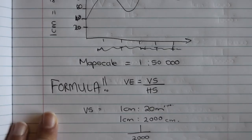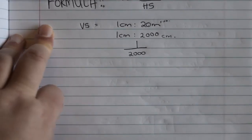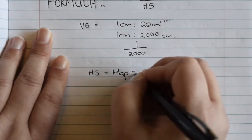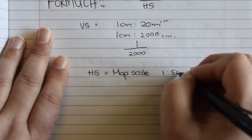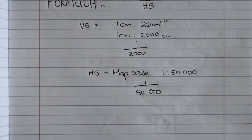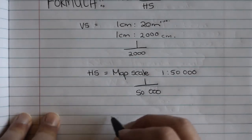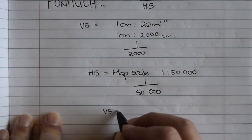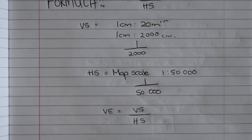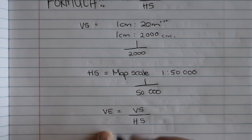The horizontal scale equals the map scale, and in this case the map scale is 1 to 50,000. As a fraction, that's 1 over 50,000. Going back to the formula: vertical exaggeration equals vertical scale over horizontal scale. To remember which is on top and which is on the bottom — vertical is going up, so it's on top; horizontal is on the bottom, like the horizon.